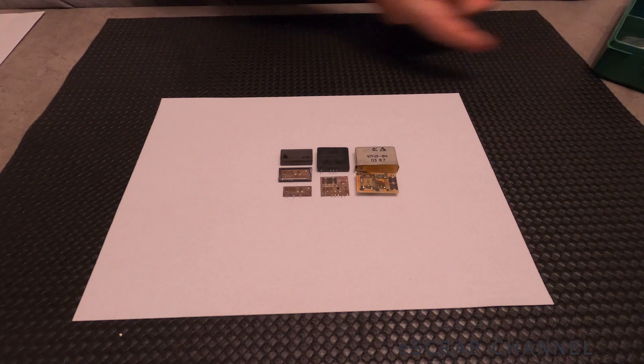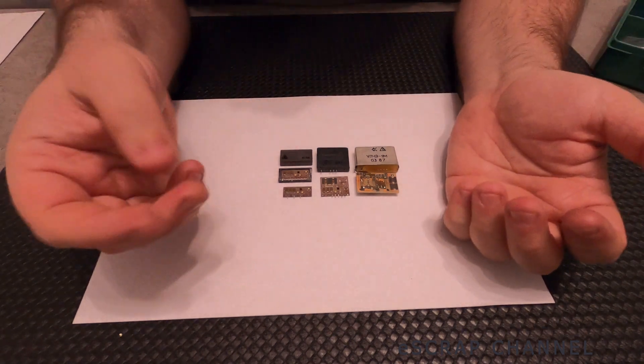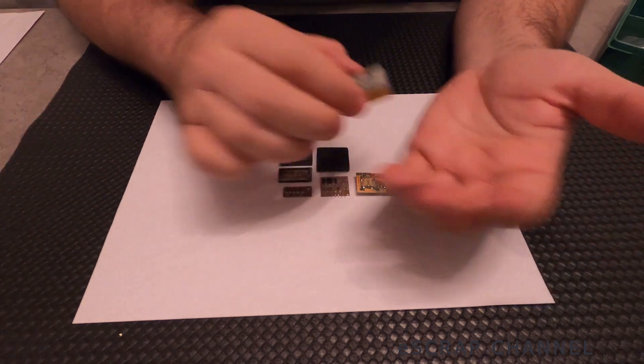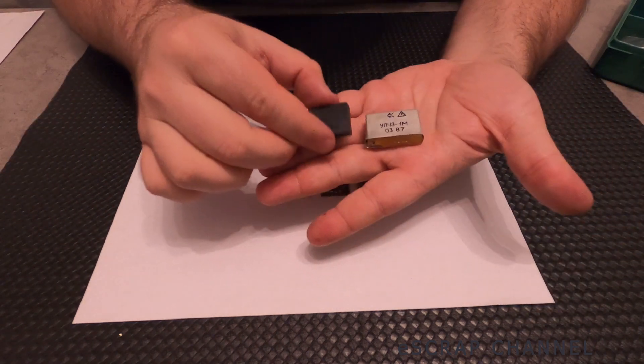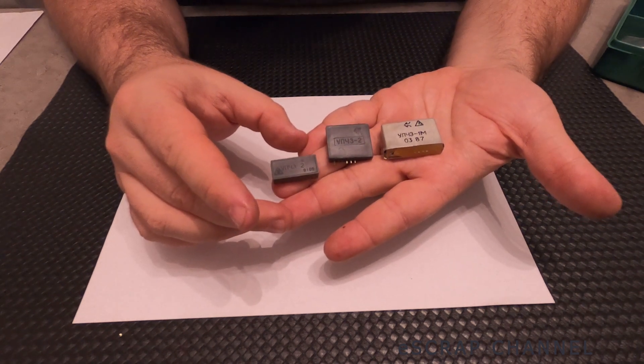Besides all this we have another type of mounted capacitors, the so-called surface mounted capacitors. Here I'll show you three different devices. They're part of the old-school Soviet Union TVs from 1980s.